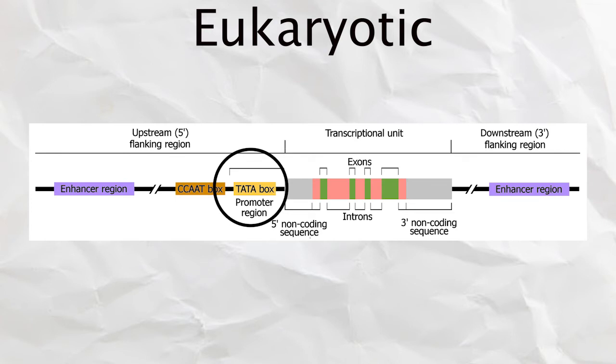Eukaryotes have a promoter, a transcription termination, have UTRs, and are transcribed 5' to 3', just like bacterial genes.